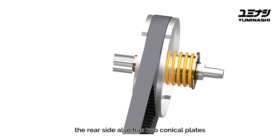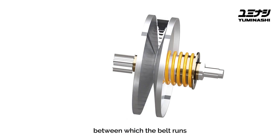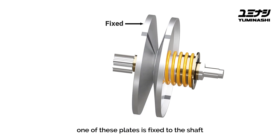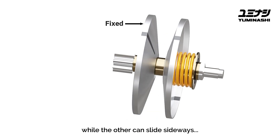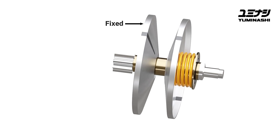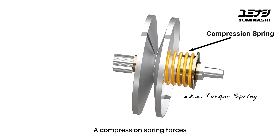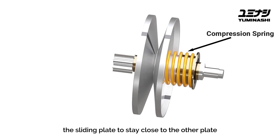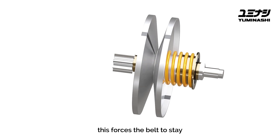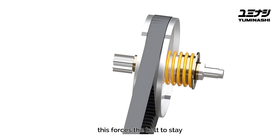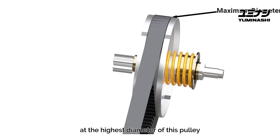The rear side also has two conical plates between which the belt runs. One of these plates is fixed to the shaft, while the other can slide sideways. A compression spring forces the sliding plate to stay close to the other plate, which forces the belt to stay at the highest diameter of this pulley.